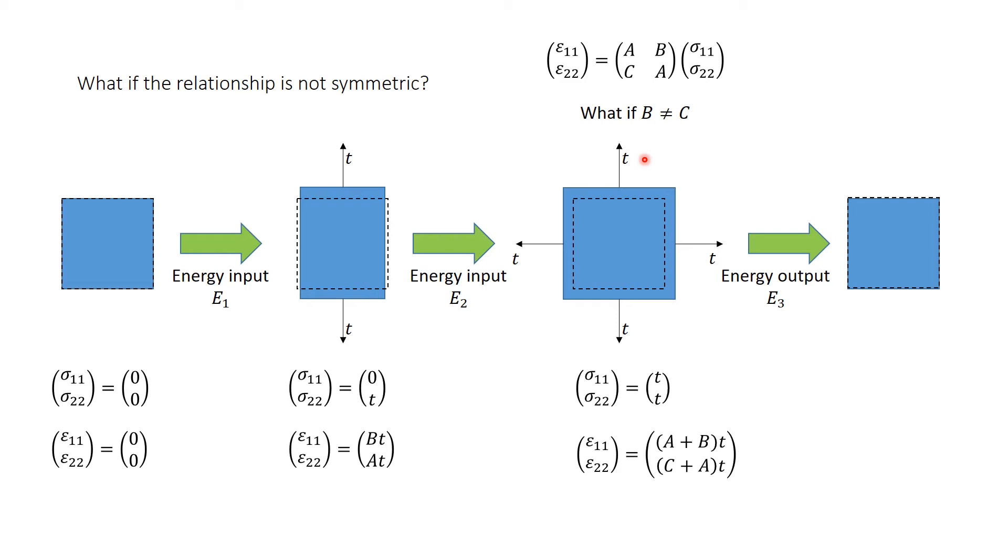In the third stage, I have stresses applied in both directions of values t and t. If I substitute t for sigma1 and t for sigma2, multiply this matrix by t and t, I will get this form for the strains epsilon1 and epsilon2.